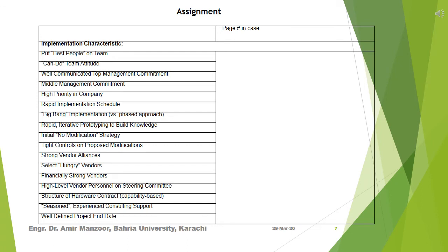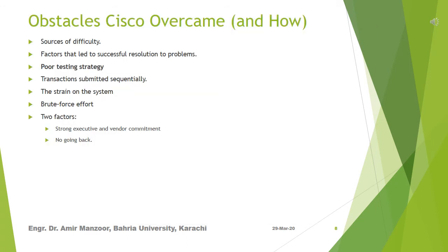You need to look at each factor and then note down the page number of the case study where this factor was mentioned. If a factor was not mentioned in the case study, write down 'not mentioned in the case.' After the discussion of success factors, it is important to identify sources of difficulty and how those sources might have been prevented or overcome more successfully. We shall also identify what factors led to successful resolution of problems.